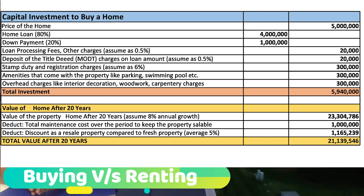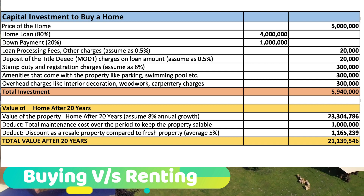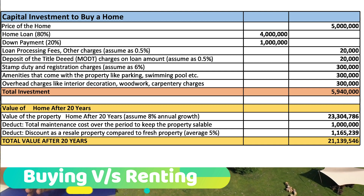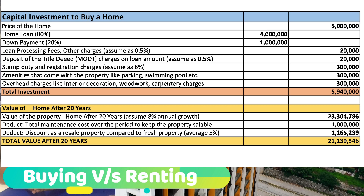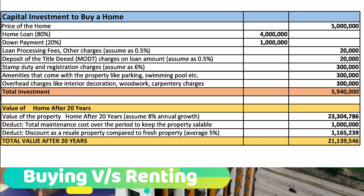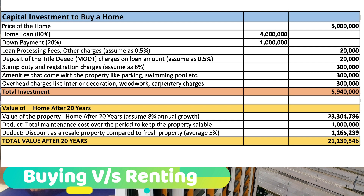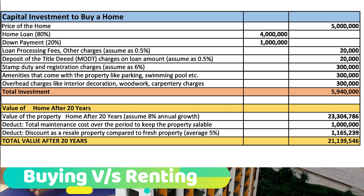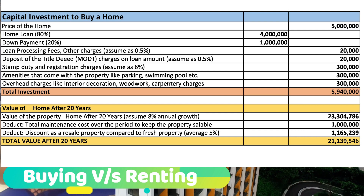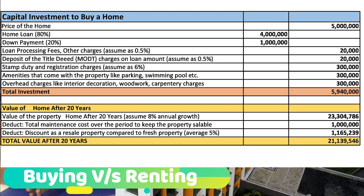The down payment and associated transaction costs have to be taken care of. The table here lists all the costs associated with a property purchase. The home price is 50 lakhs, with an 80% home loan and 20% down payment. We take 0.5% for processing and other charges, another 0.5% for commodity charges, 6% for stamp duty and registration, a lump sum of 3 lakhs for amenities like gym, pool, and parking, and another 3 lakhs for overhead charges like woodwork and carpentry. The overall investment comes to 59 lakhs 40 thousand.